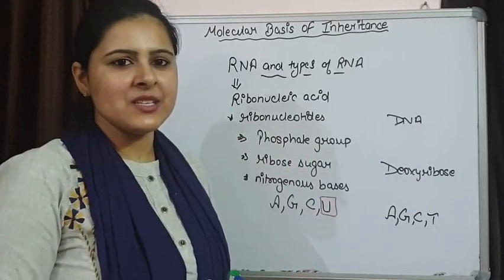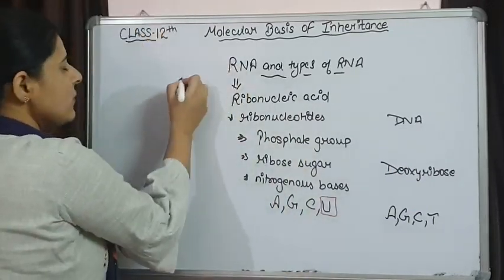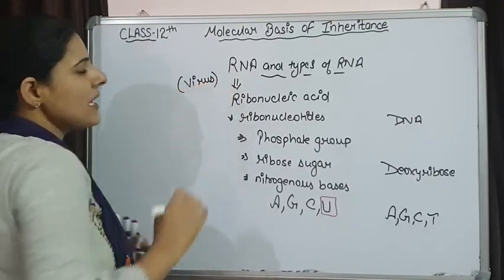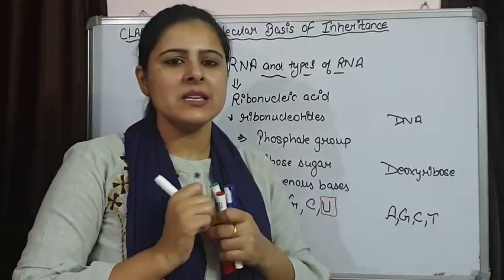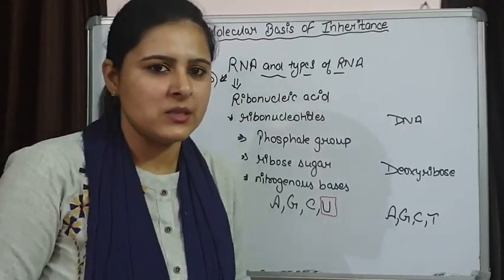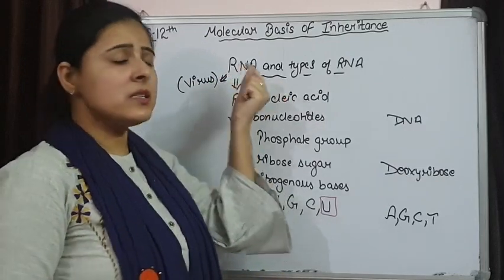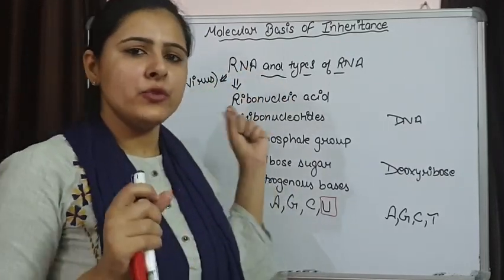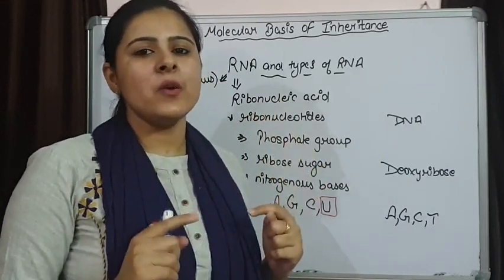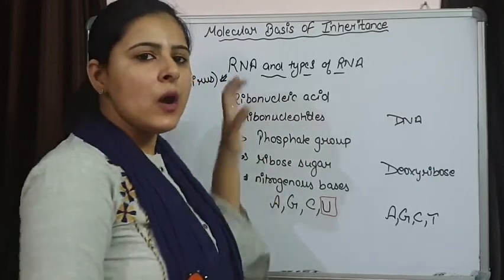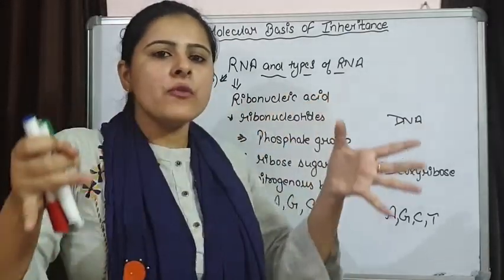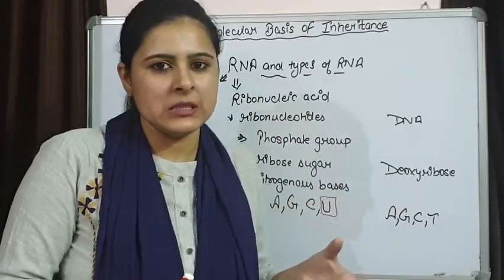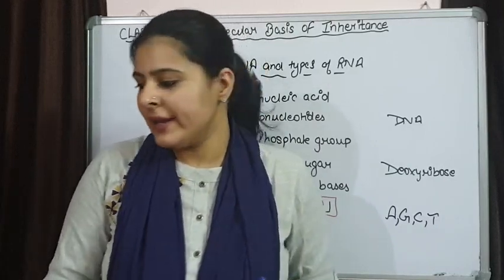DNA is present as genetic material in most organisms, while RNA is also behaving as genetic material but it is present only in some viruses. The viruses that are having RNA as their genetic material we call them retroviruses. This RNA, instead of behaving as genetic material only in a few viruses, is playing a very important role in protein synthesis. Without RNA, protein synthesis will not happen, and not only one but lots of different types of RNA are involved in protein synthesis. We are going to talk about the three major types of RNA that are important for the process of protein synthesis.